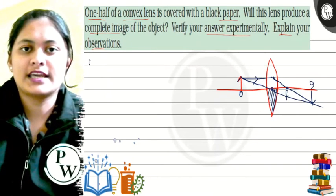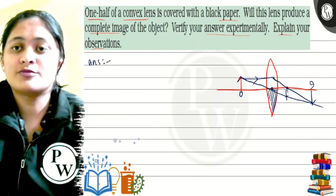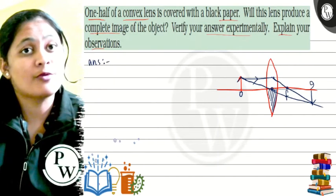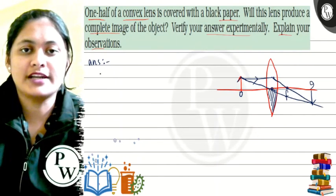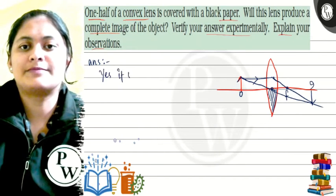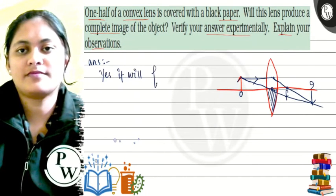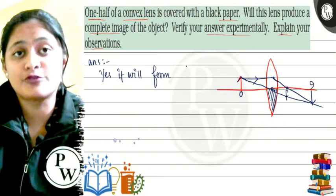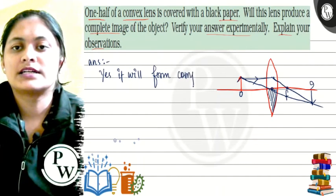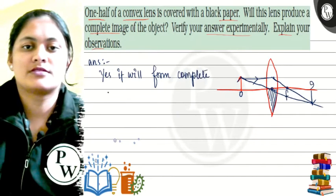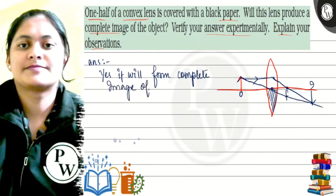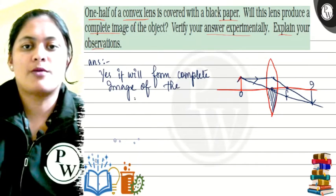So to write our answer: the first question was whether the image will be made or not. Of course it will be made, and it is also a complete image. It will form a complete image of the object.